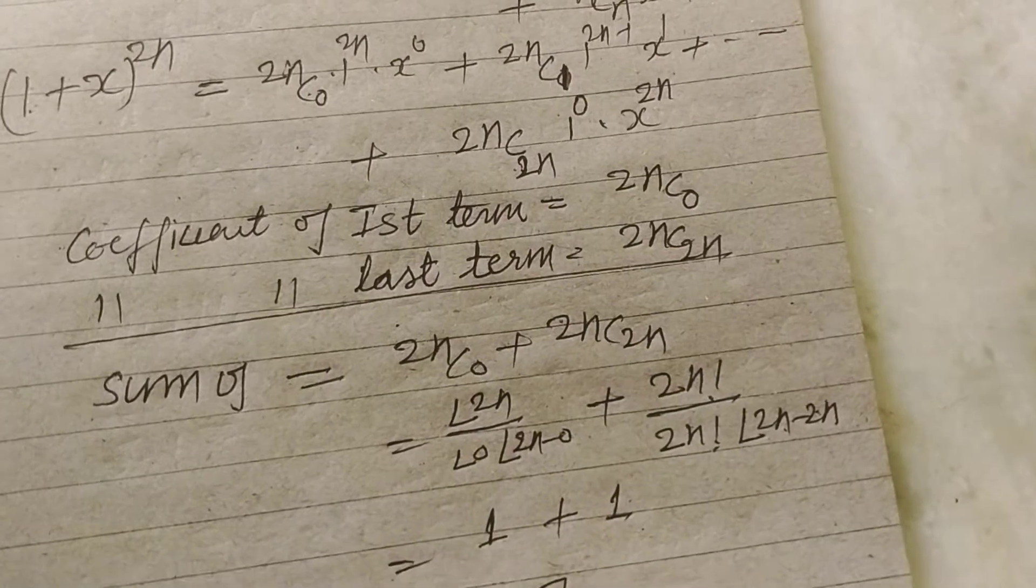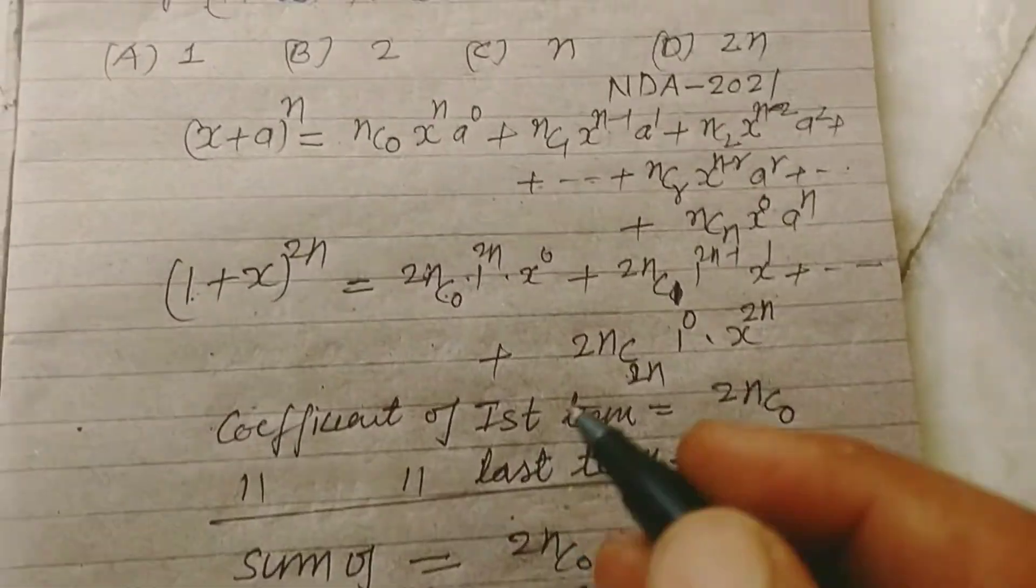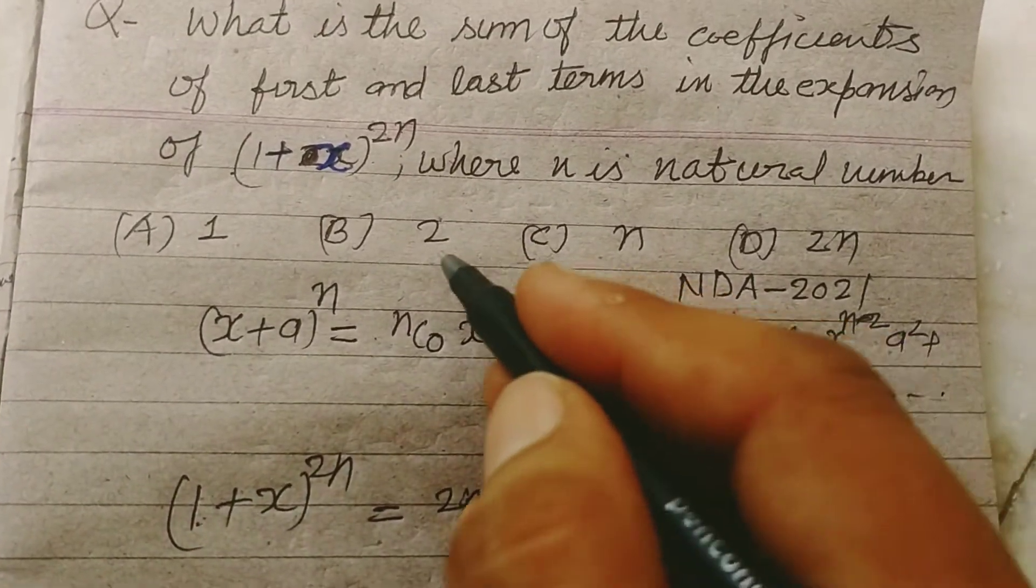So the sum of the first and last term in the expansion of 1 plus x to the power 2n is 2, which is found in option B.